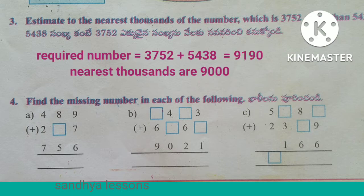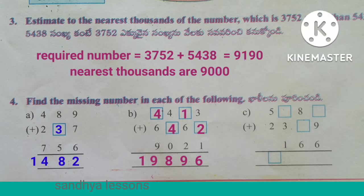Problem 3: Estimate to the nearest thousands the number which is 3,752 more than 5,438. Solution: the required number equals 3,752 plus 5,438, that is 9,190. So the estimated nearest thousands is 9,000.